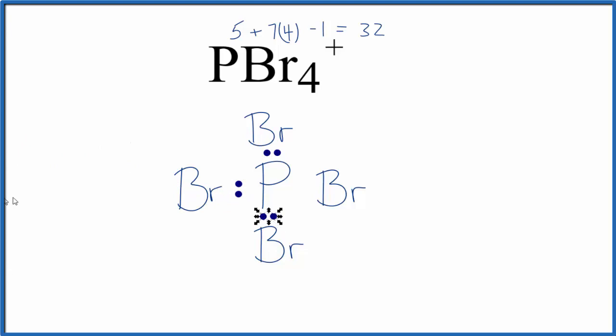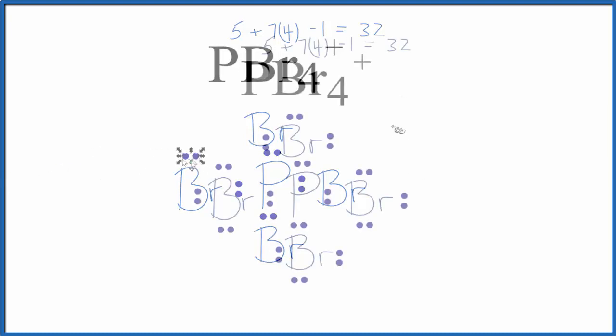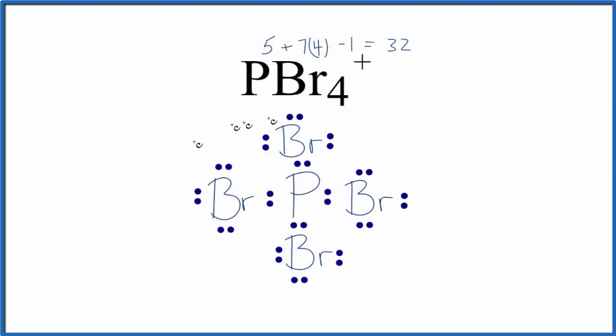Once we're done with that, we'll put electrons around the outside of these bromine atoms to complete their octets, keeping in mind we only have 32 valence electrons. So at this point, we've used all 32 valence electrons. Everything has octets—the phosphorus has an octet, and each bromine has an octet. So this is the Lewis structure for PBr4+.